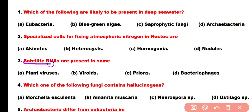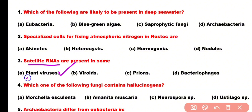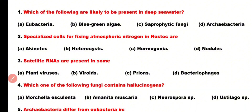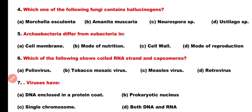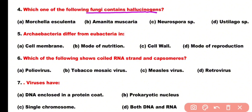Question number 3: Satellite RNAs are present in some plant viruses, viroids, prions, or bacteriophages. Correct answer is option A. Satellite RNAs are present in plant viruses. Question number 4: Which of the following fungi contain hallucinogens? Options: Morchella esculenta, Amanita muscaria, Neurospora species, or Ostelages species.